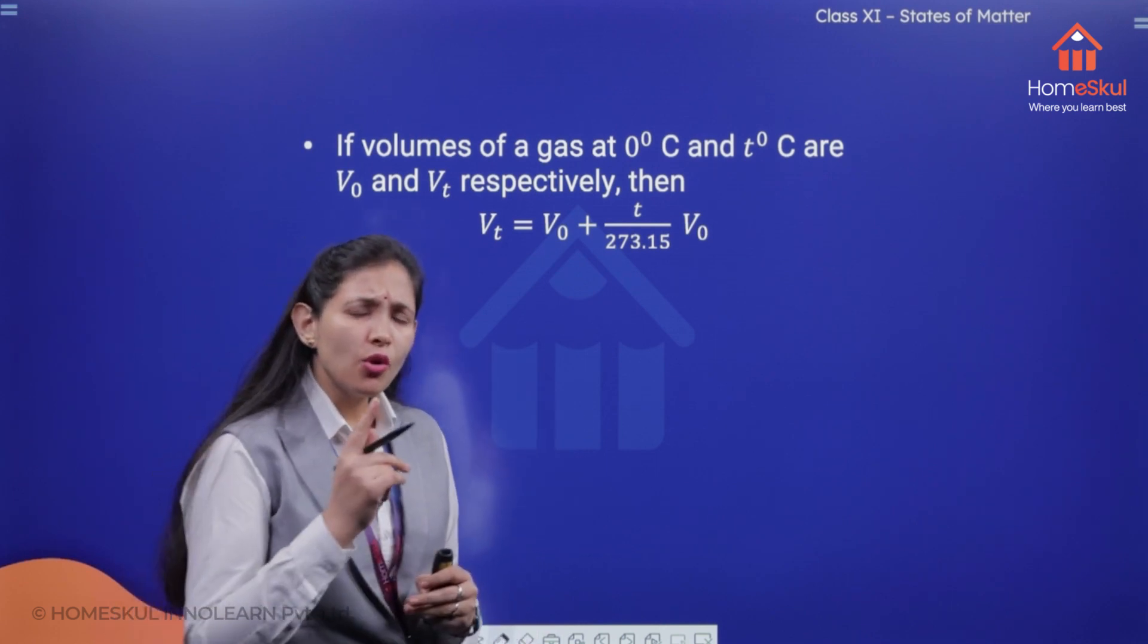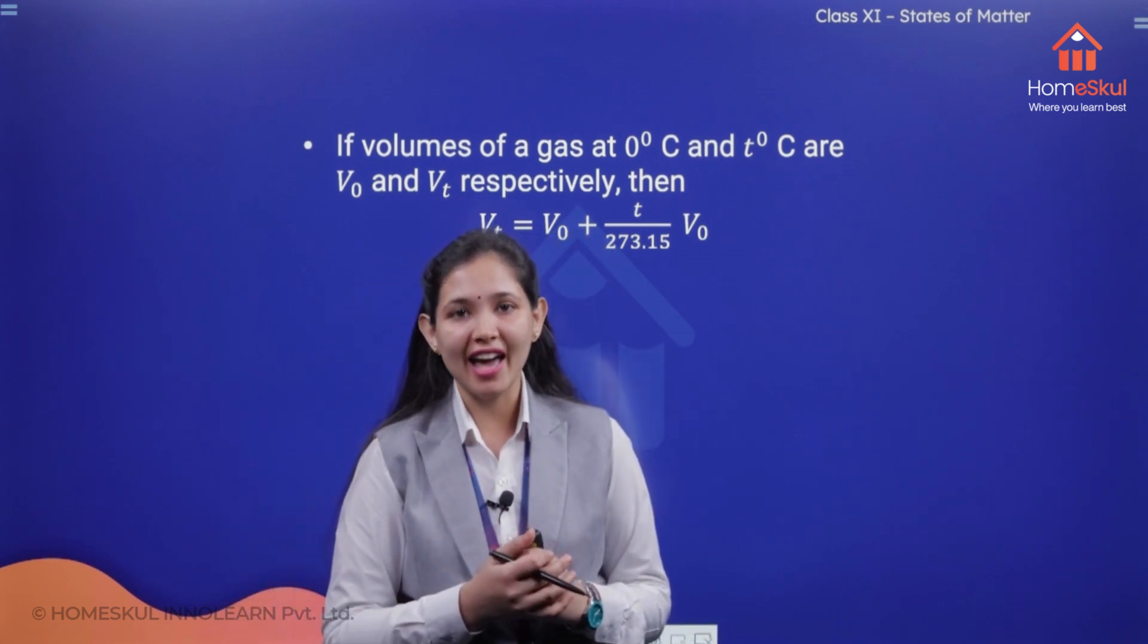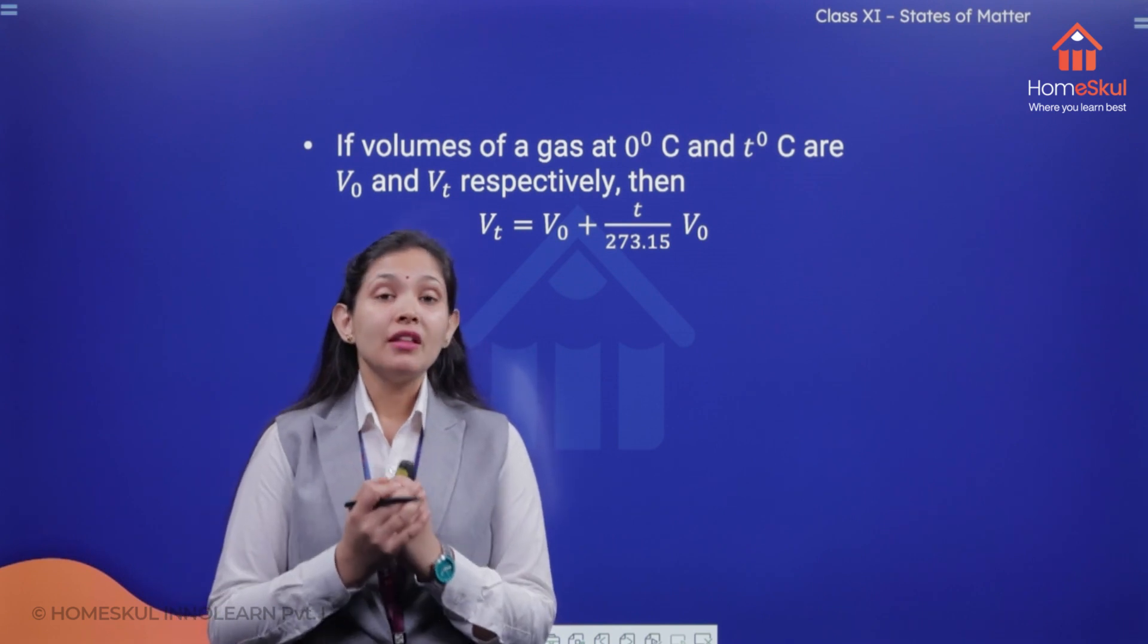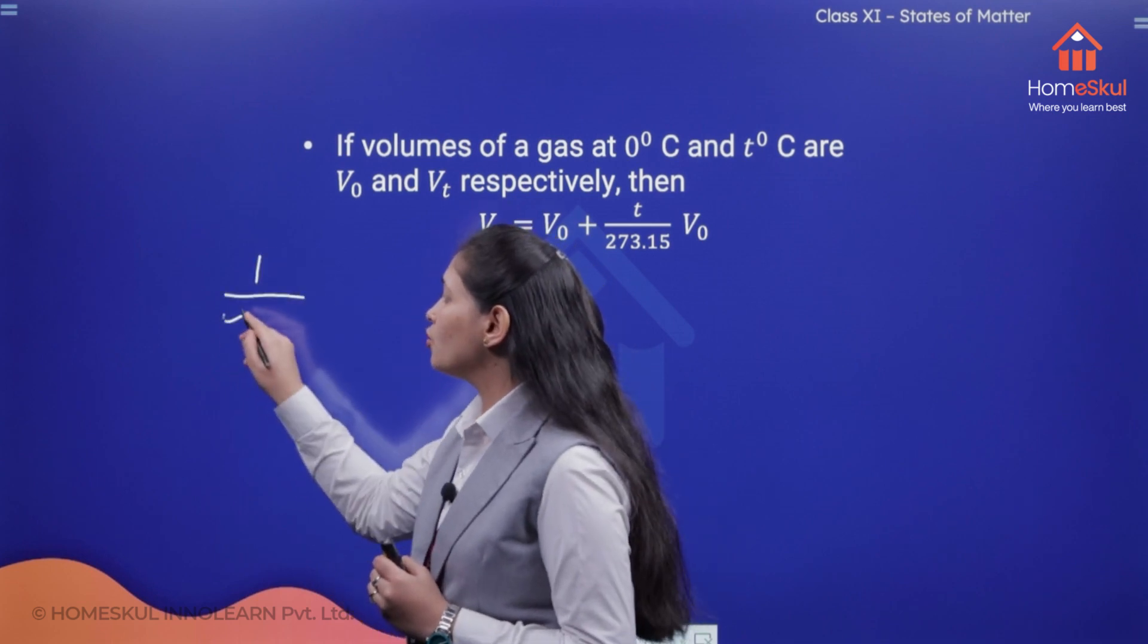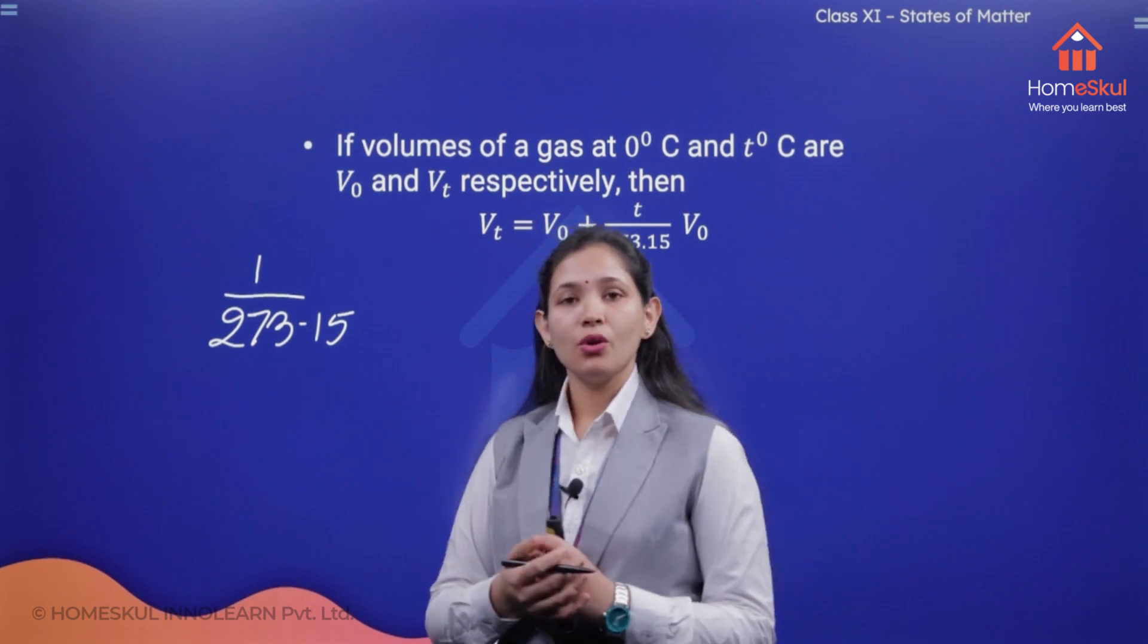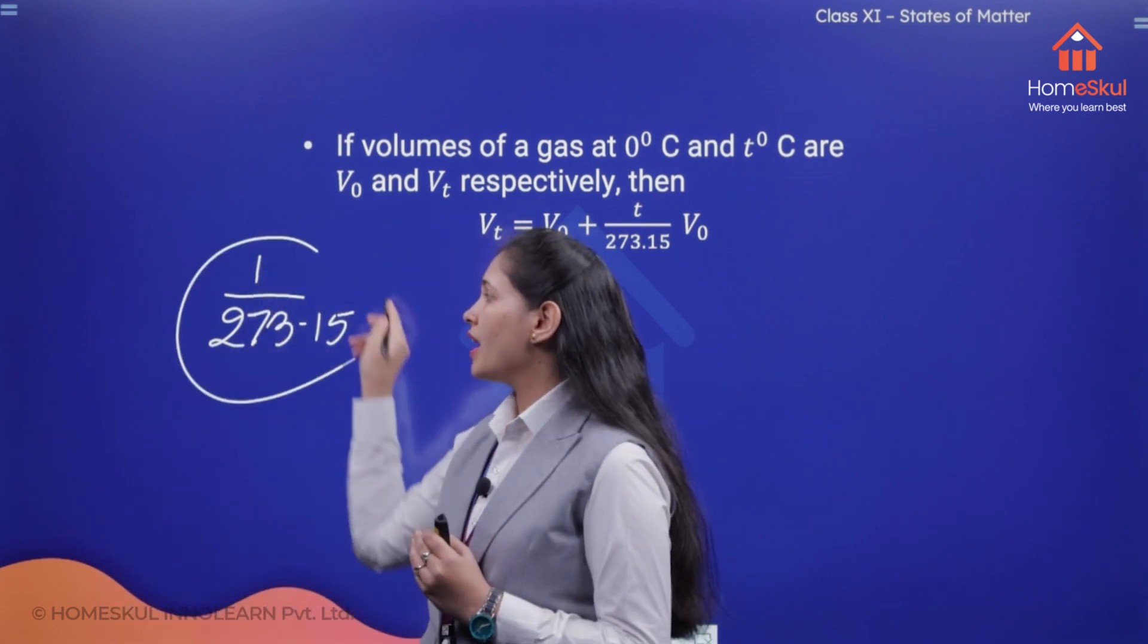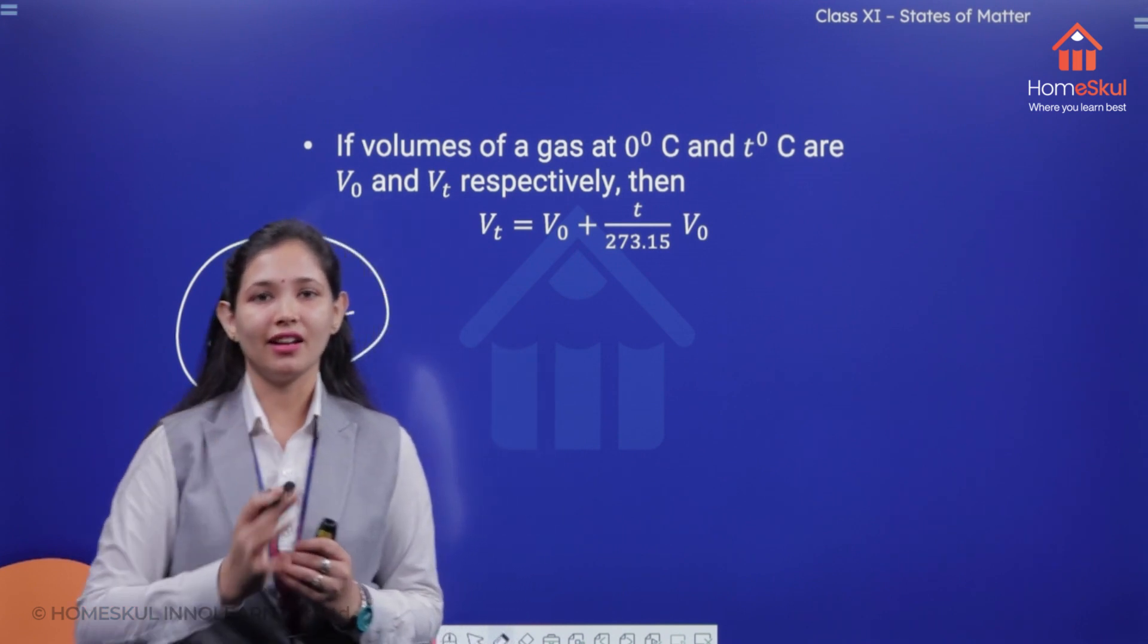And one more important thing is that when you rise the temperature by 1 degree for a gas which is going to have a fixed amount at constant pressure, what is going to happen? There will be increase in the volume by 1 upon 273.15, so that is by the initial volume there will be increase by 1 by 273.15 at 0 degree centigrade.